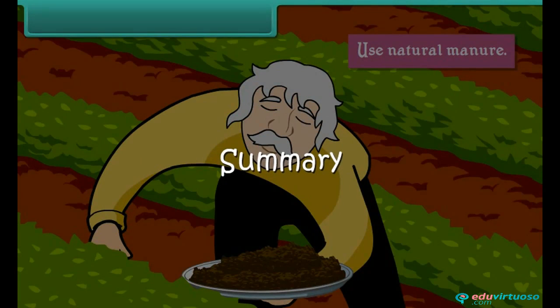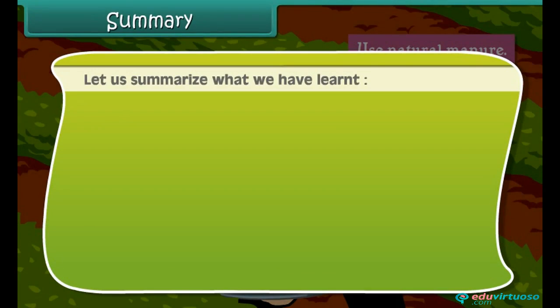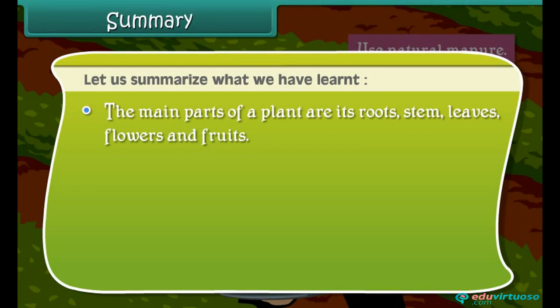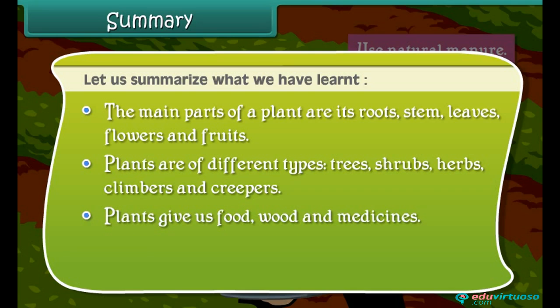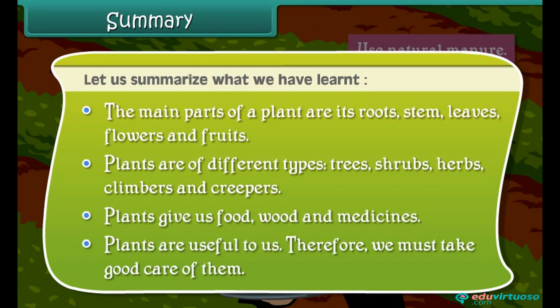Let us summarize what we have learnt. The main parts of a plant are its roots, stem, leaves, flowers, and fruits. Plants are of different types: trees, shrubs, herbs, climbers, and creepers. Plants give us food, wood, and medicines. Plants are useful to us, and therefore we must take good care of them.